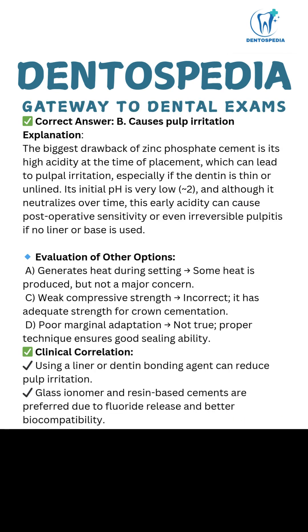Correct answer: B — causes pulp irritation. The biggest drawback of zinc phosphate cement is its high acidity at the time of placement, which can lead to pulpal irritation, especially if the dentin is thin or unlined. Its initial pH is very low, approximately 2, and although it neutralizes over time, this early acidity can cause post-operative sensitivity or even irreversible pulpitis if no liner or base is used.